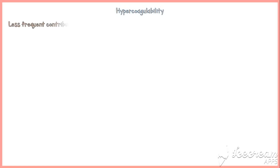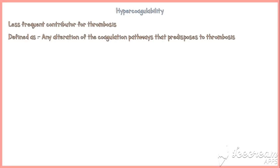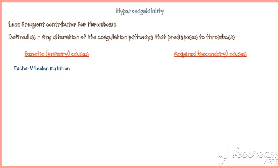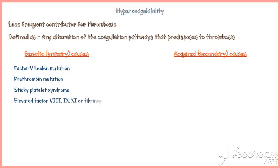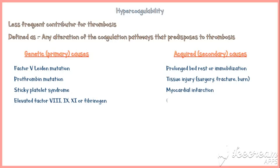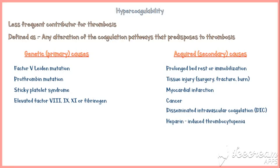Hypercoagulability is a less frequent but equally important contributor to thrombosis, defined as any alteration of the coagulation pathways that predisposes to thrombosis. Causes can be genetic or acquired. Commonest genetic causes include factor V Leiden mutation, prothrombin mutation, sticky platelet syndrome, and elevated factor VIII, IX, XI, or fibrinogen. Acquired causes include prolonged bed rest, tissue injury (surgery, fracture, burn), myocardial infarction, cancer, disseminated intravascular coagulation, heparin-induced thrombocytopenia, and antiphospholipid antibody syndrome.